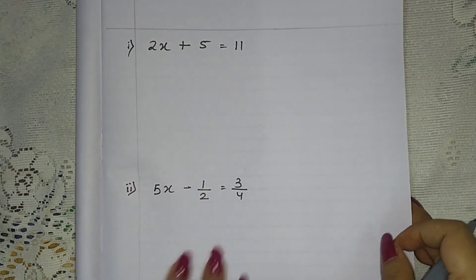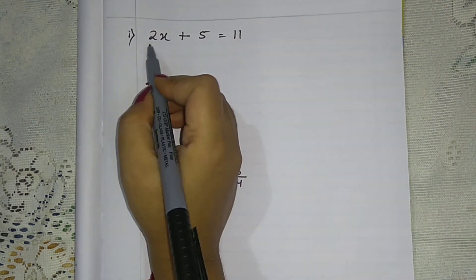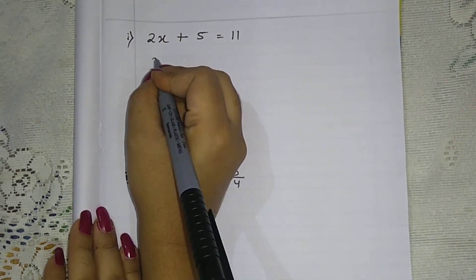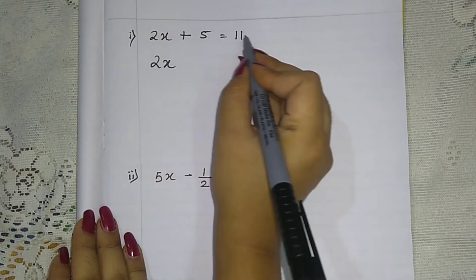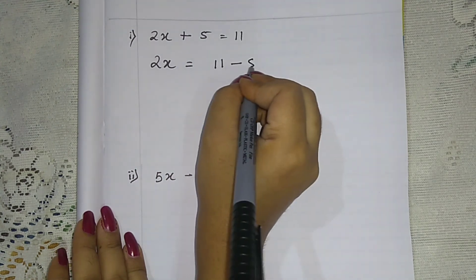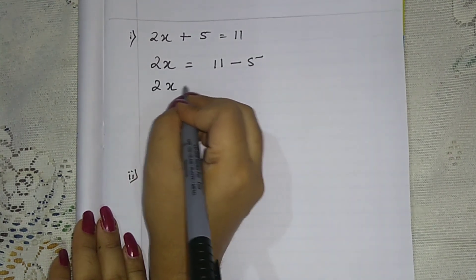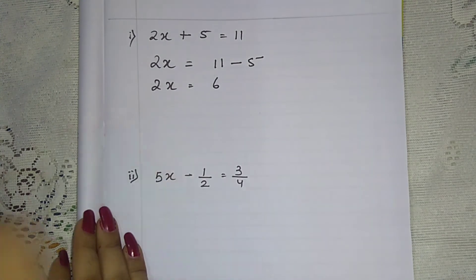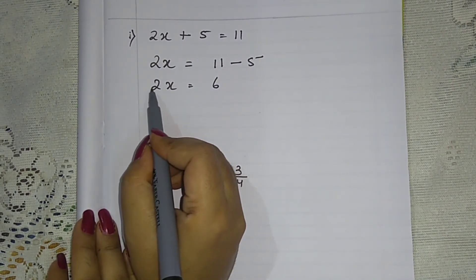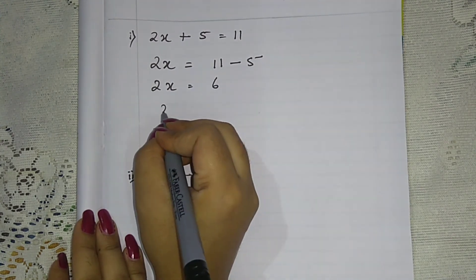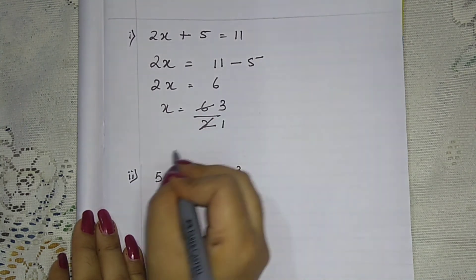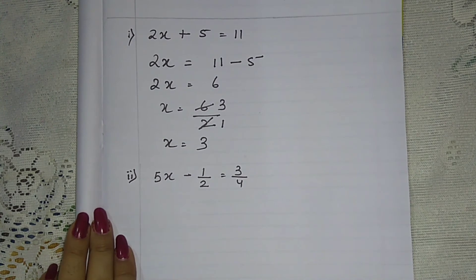Let's solve two examples using the shortcut method. First: 2x plus 5 equals 11. The positive 5 transposes and becomes negative: 2x equals 11 minus 5, which is 6. The multiplication by 2 transposes as division: x equals 6 by 2, so x equals 3.